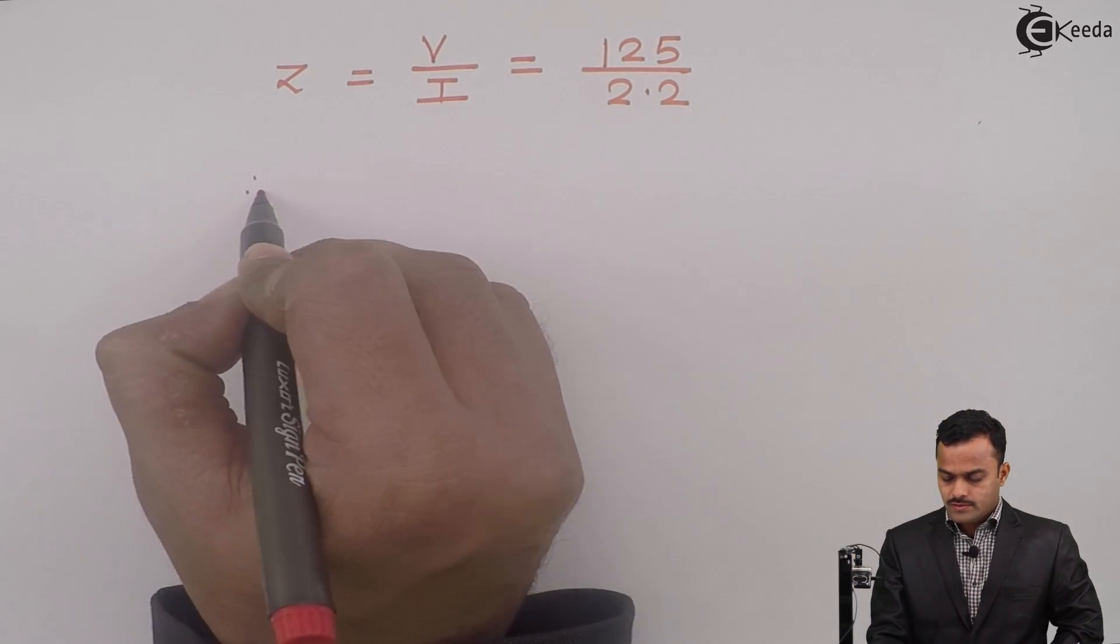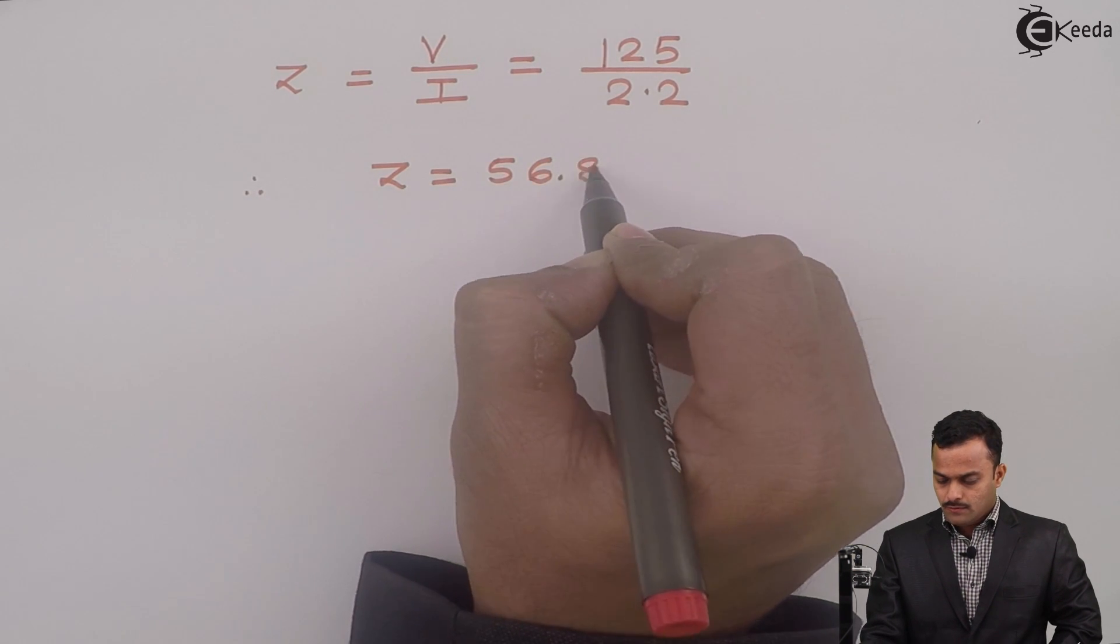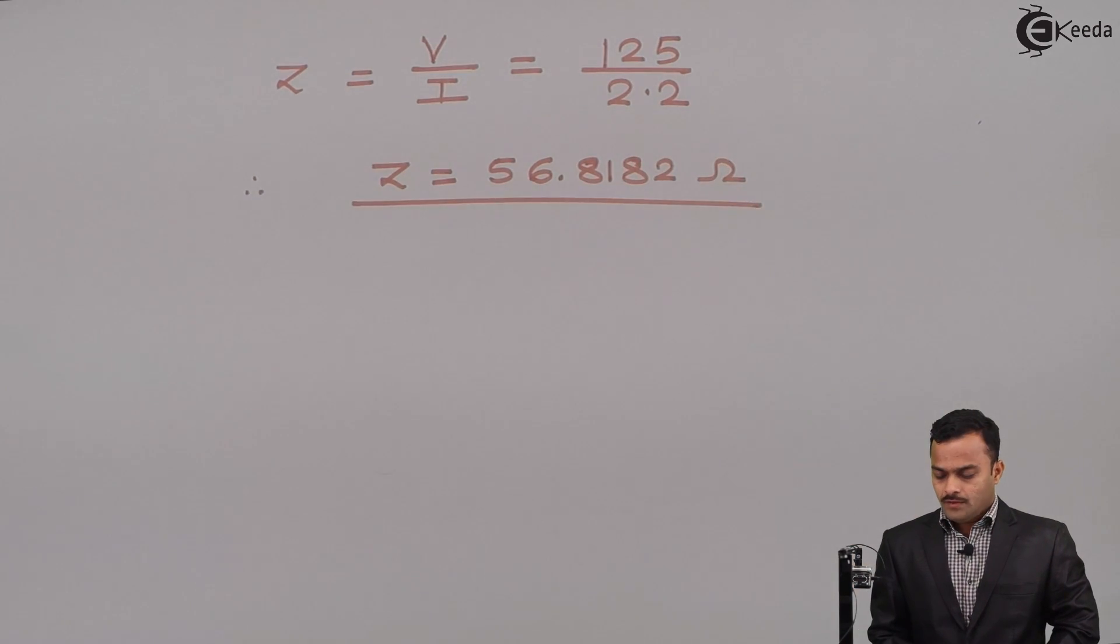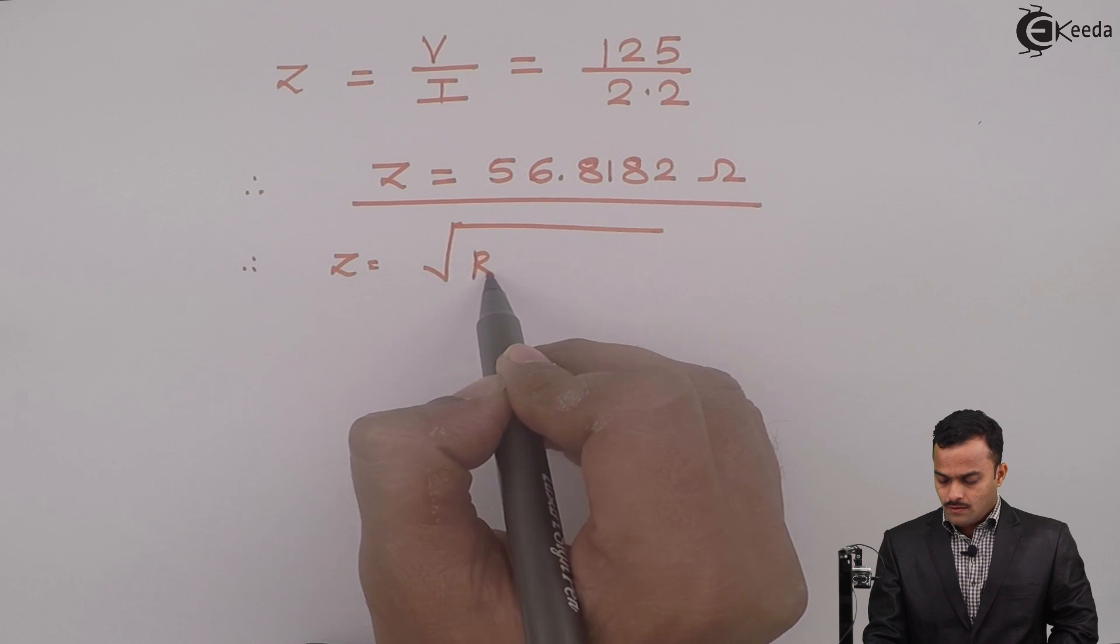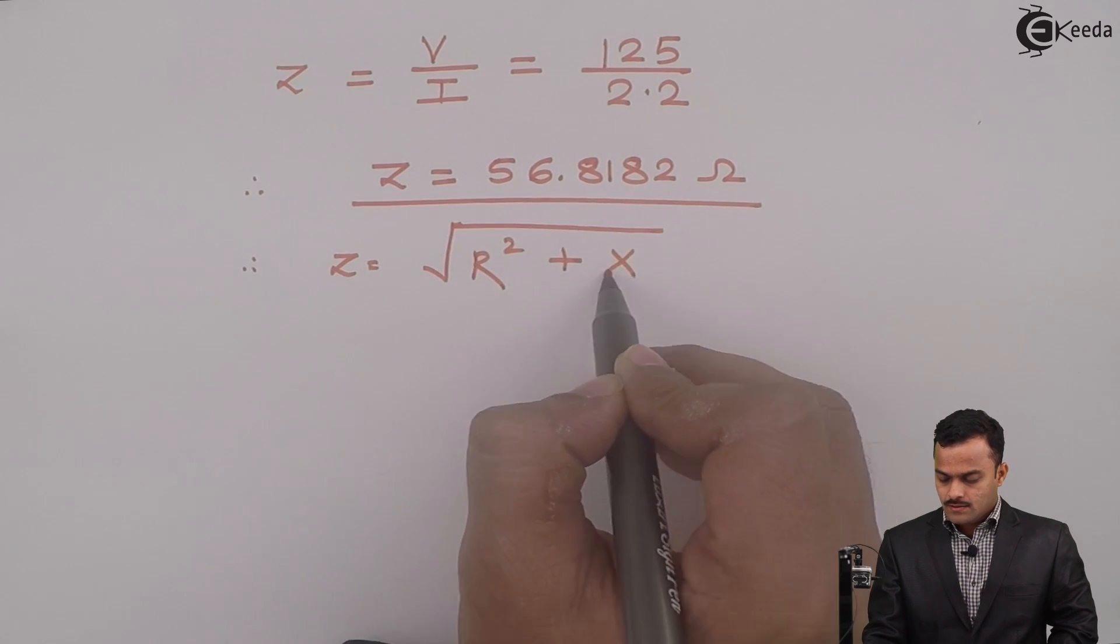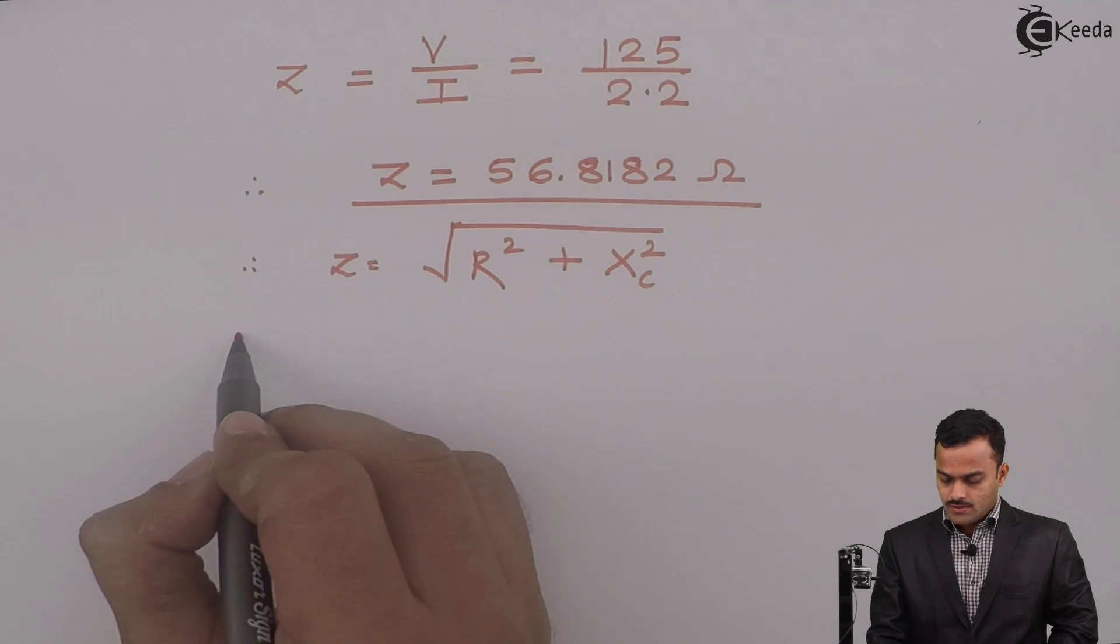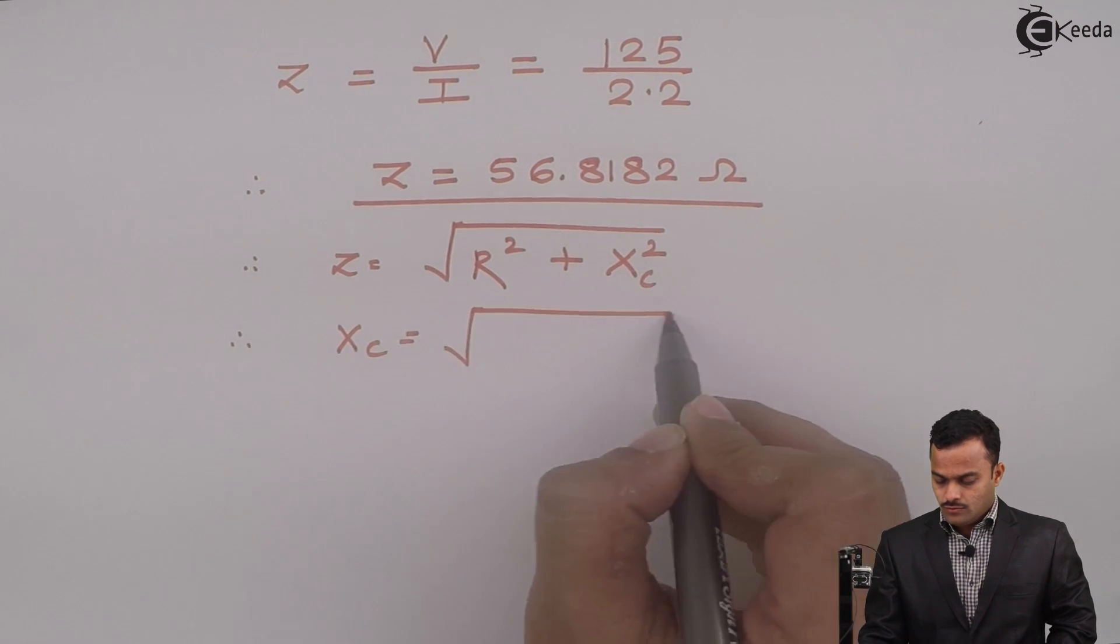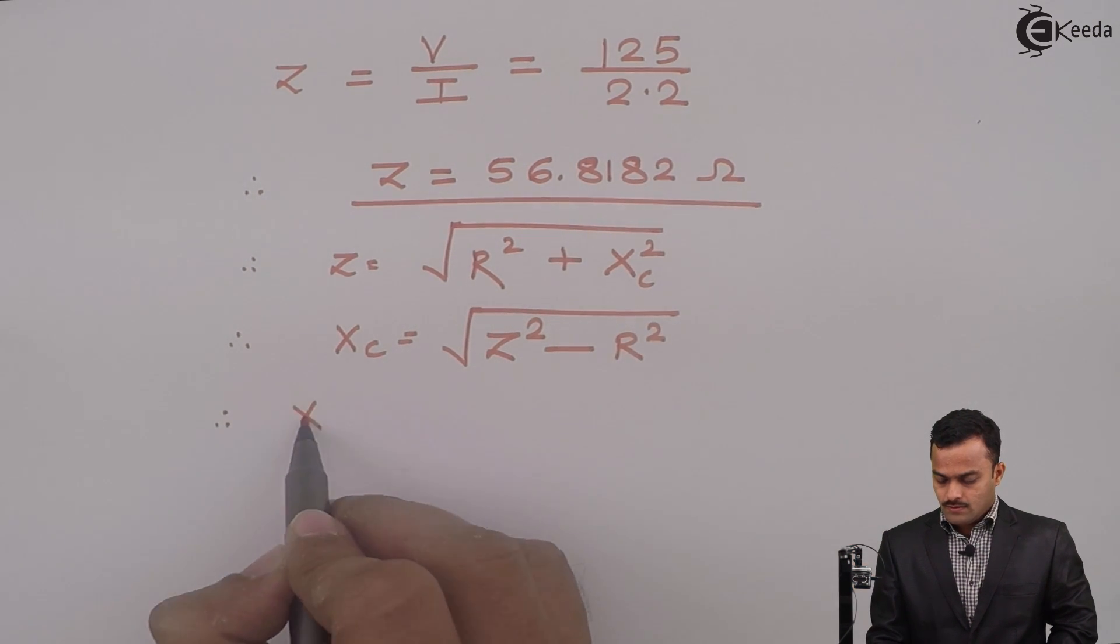V is 125 volt and I is 2.2, so Z equal to 56.8182 ohm. Now if I know R and Z, how to get Z? Z is nothing but root of R square plus XC square, where X is capacitive reactance. So unknown is XC. So I can get XC equal to root of Z square minus R square.